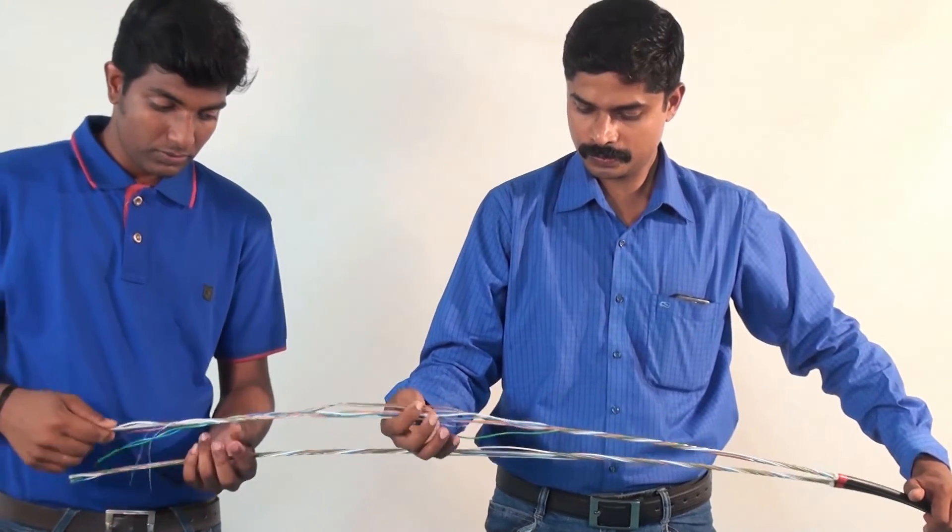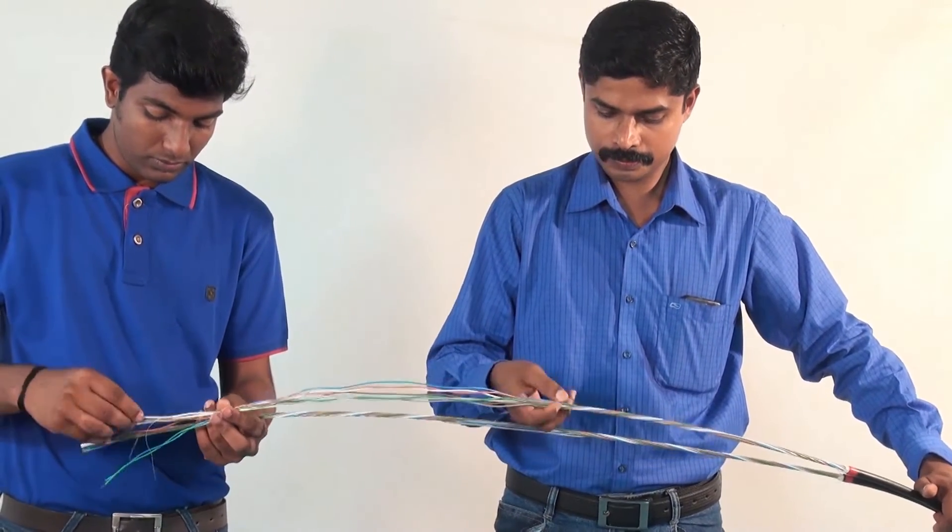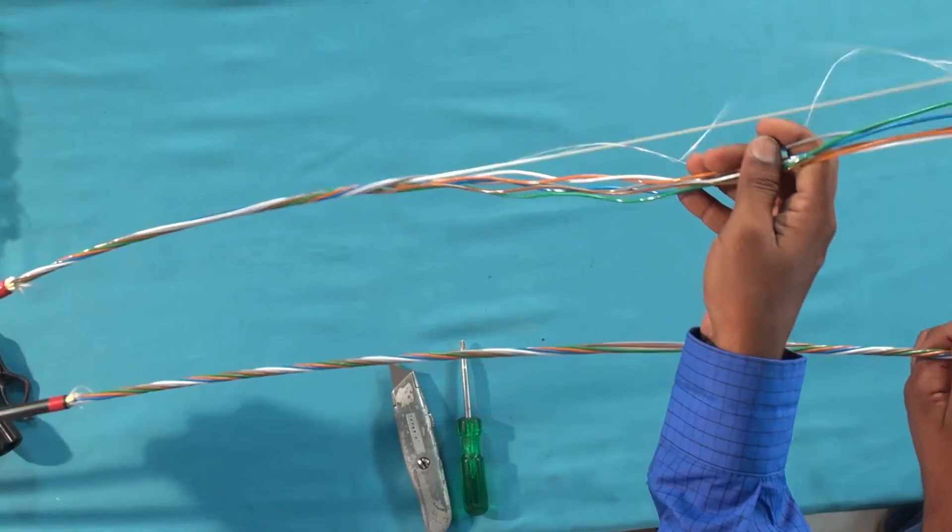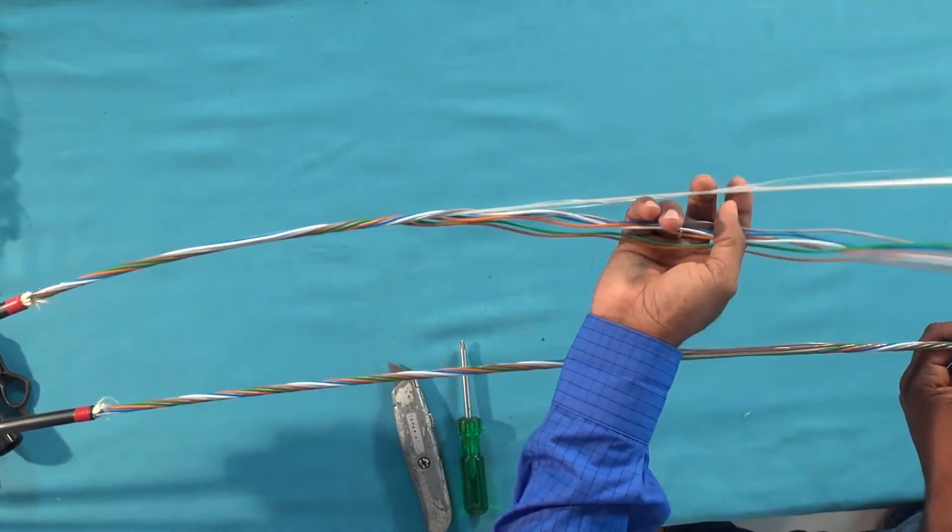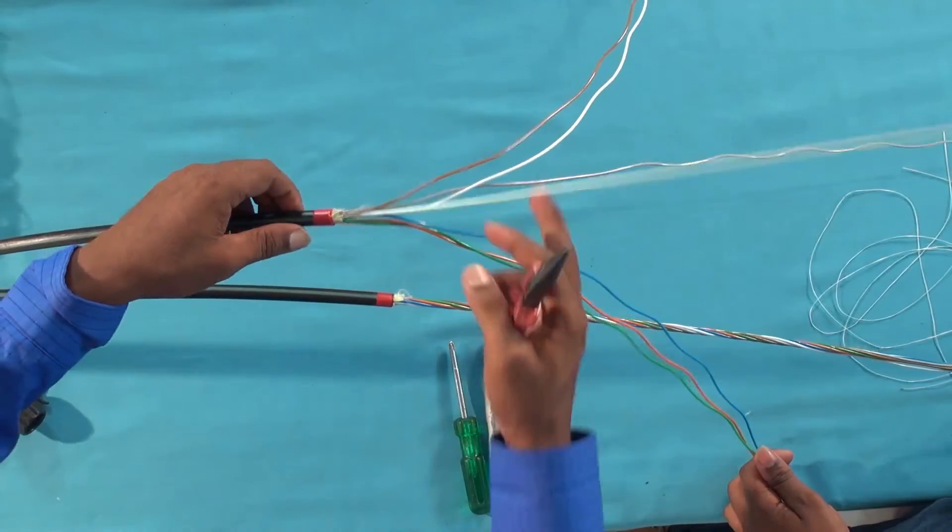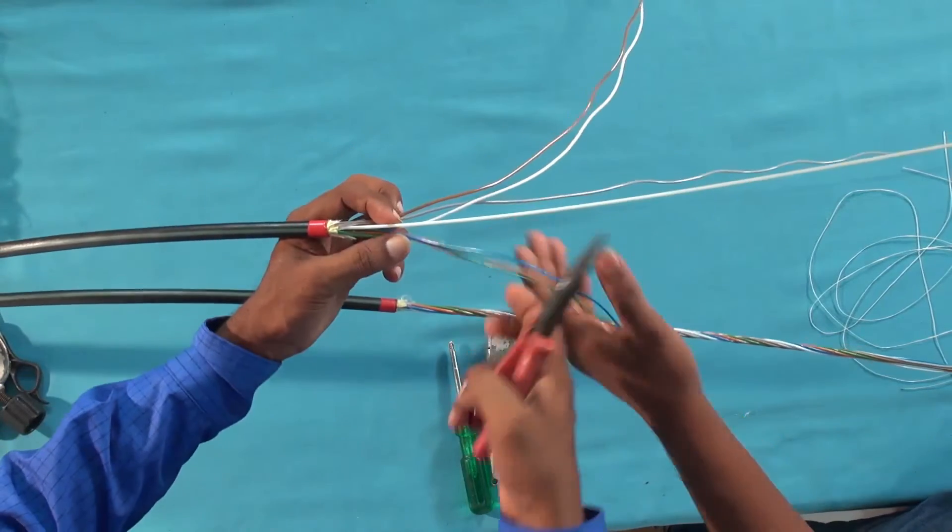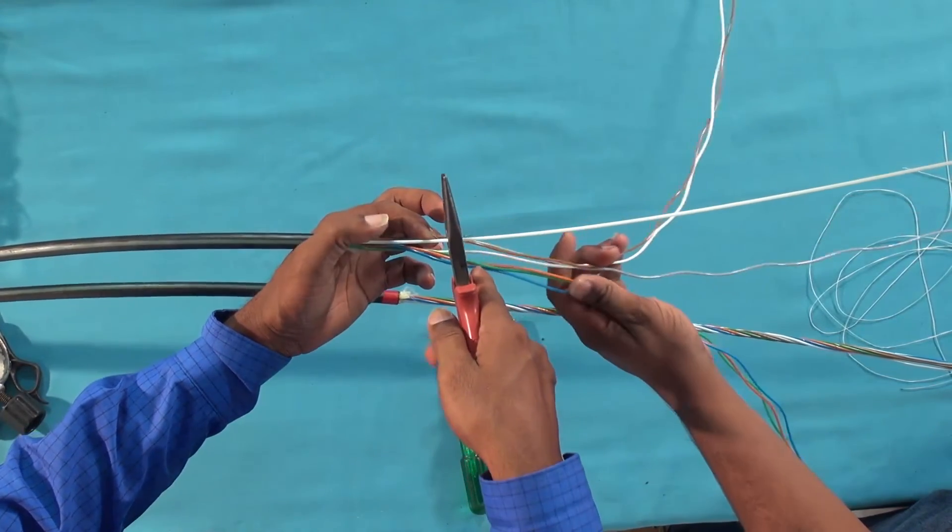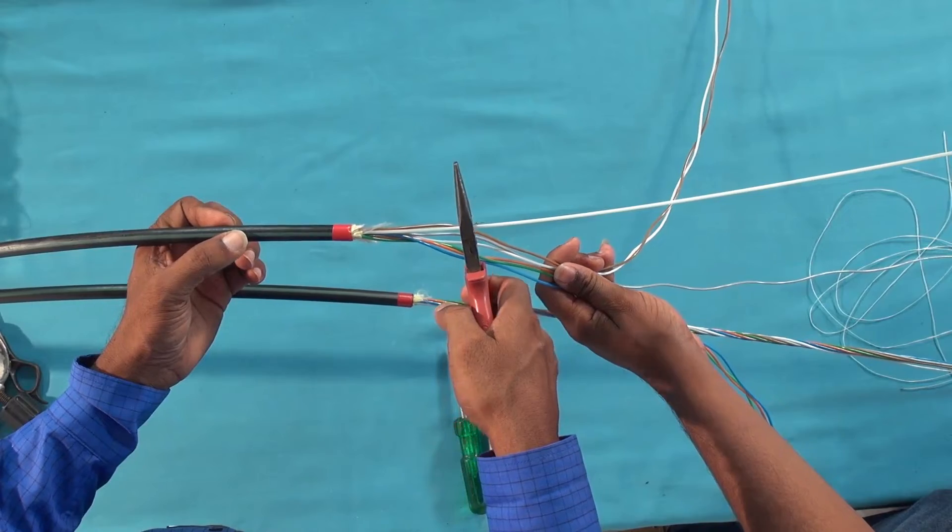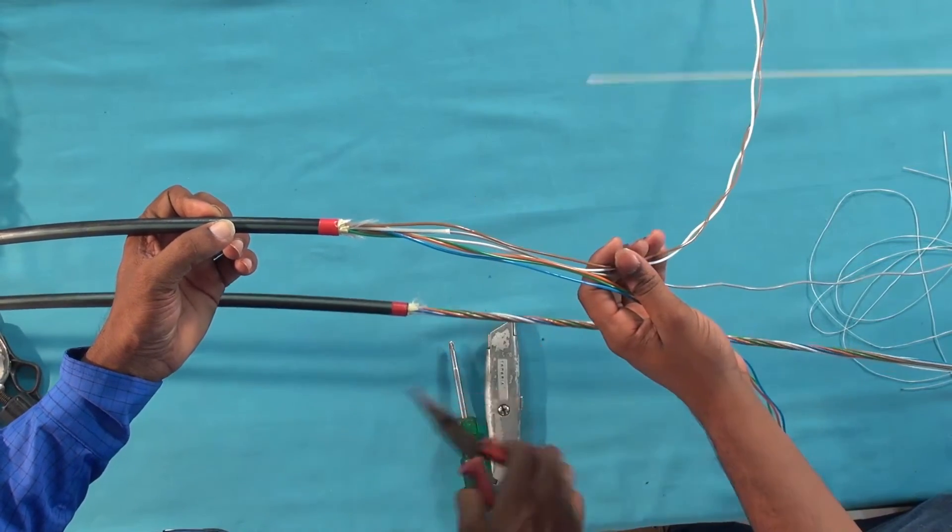Separate the loose tubes. Next, cut the dielectric central strength member at the center of the cable. Around 15 cm will be left out.